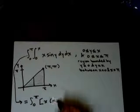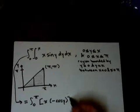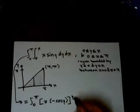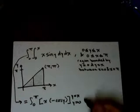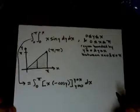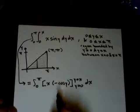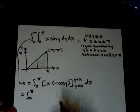We're gonna go ahead and enter in these limits and we're gonna get 0 to pi, minus x cosine x, and we get a minus and a minus so that's gonna become positive times our differential dx.